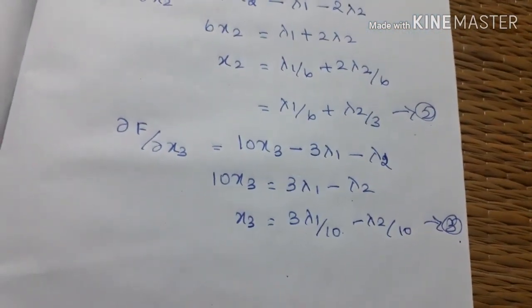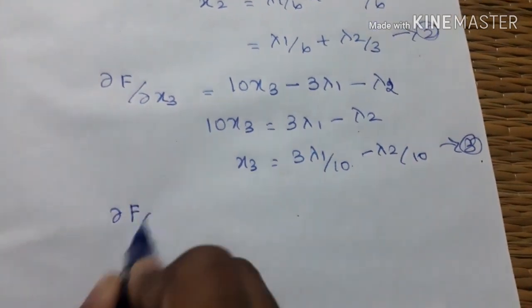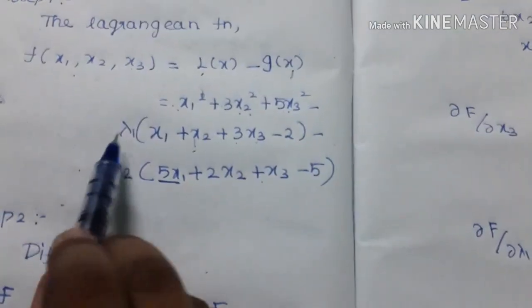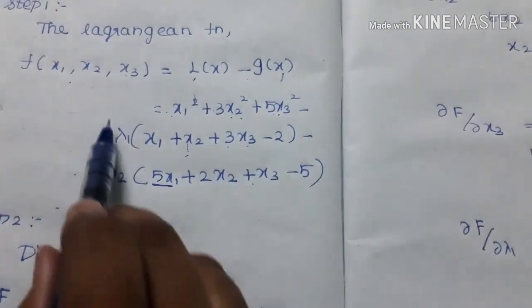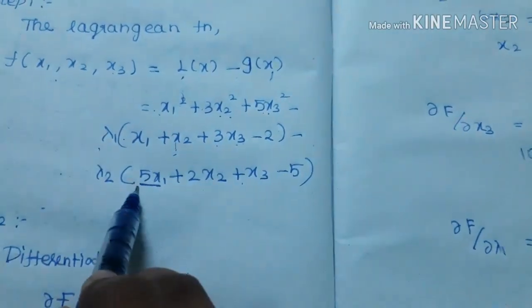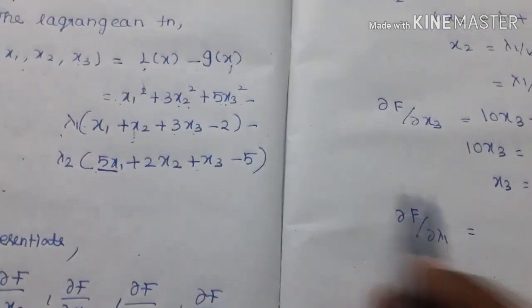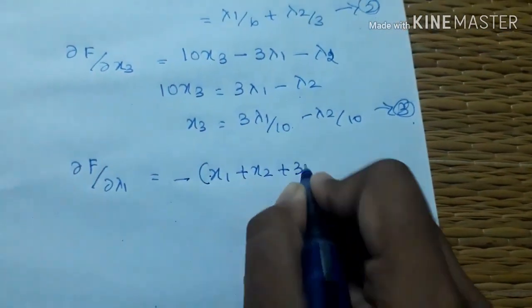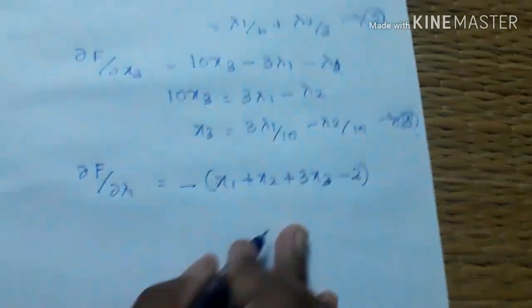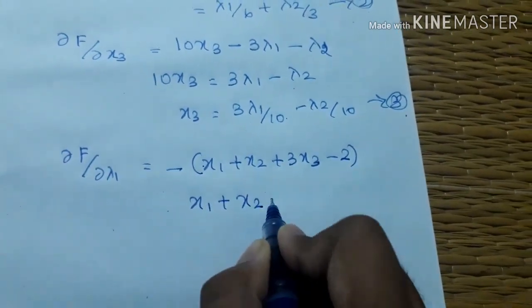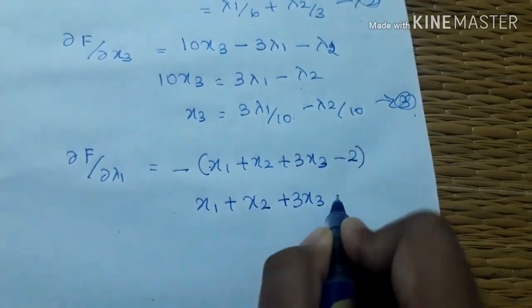Next, we differentiate with respect to lambda1. The value is constant and 0. So minus of x1 plus x2 plus 3x3 minus 2 equals 0. Therefore x1 plus x2 plus 3x3 is equal to 2. This is the fourth equation.